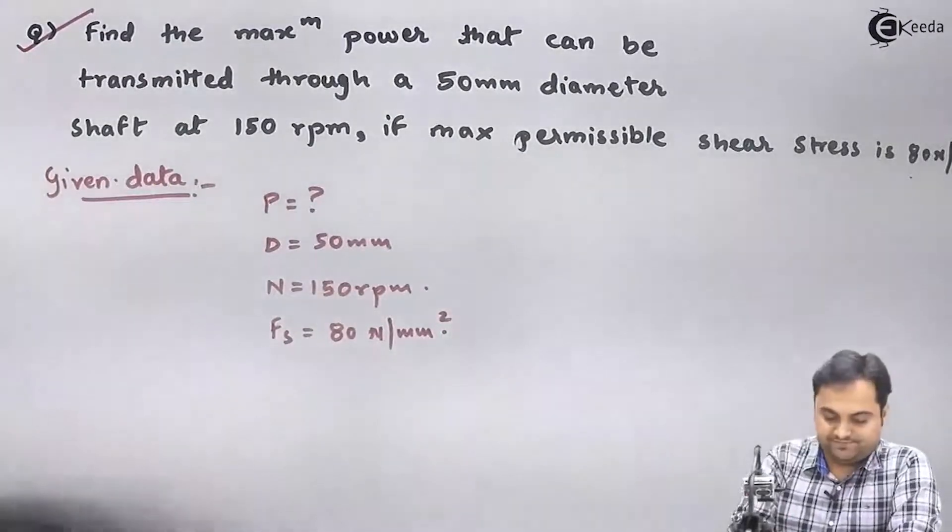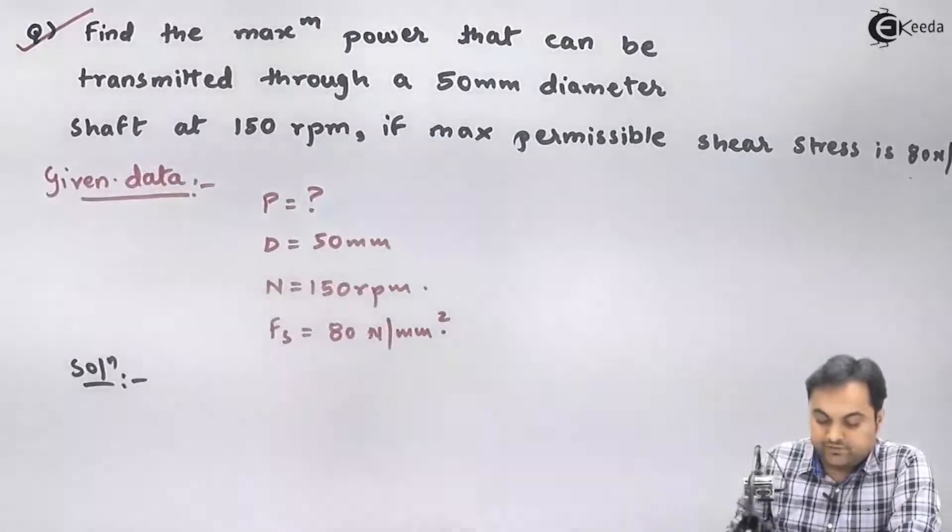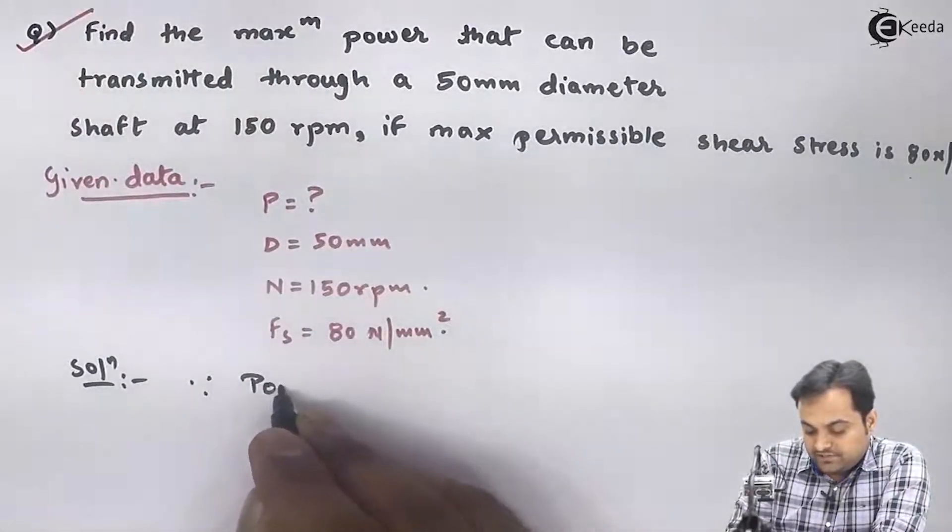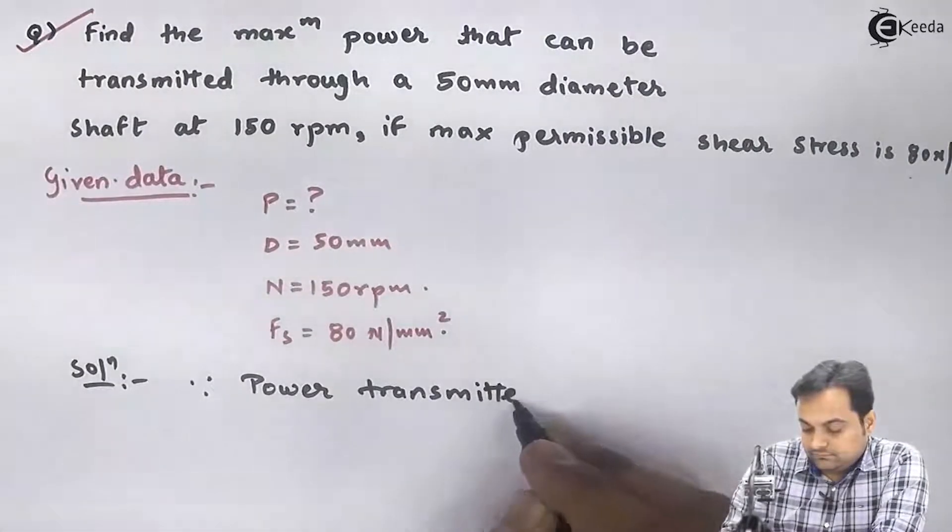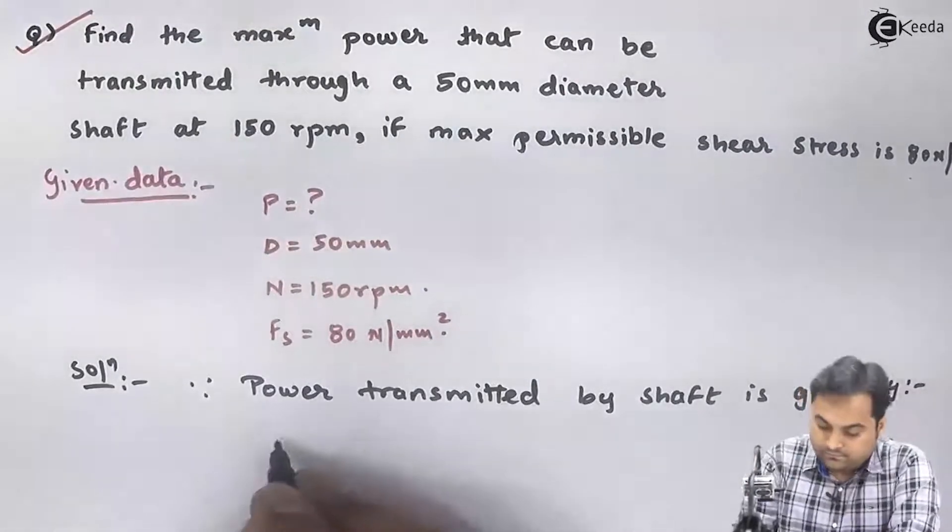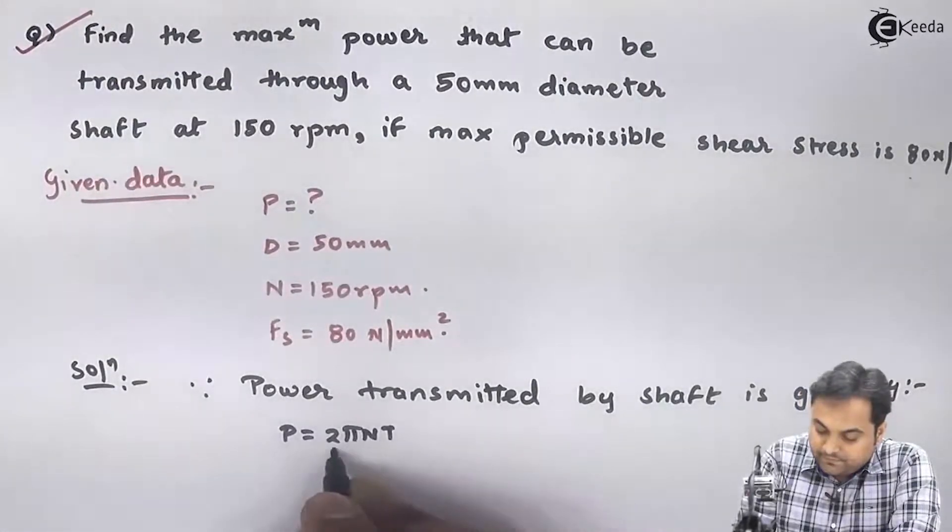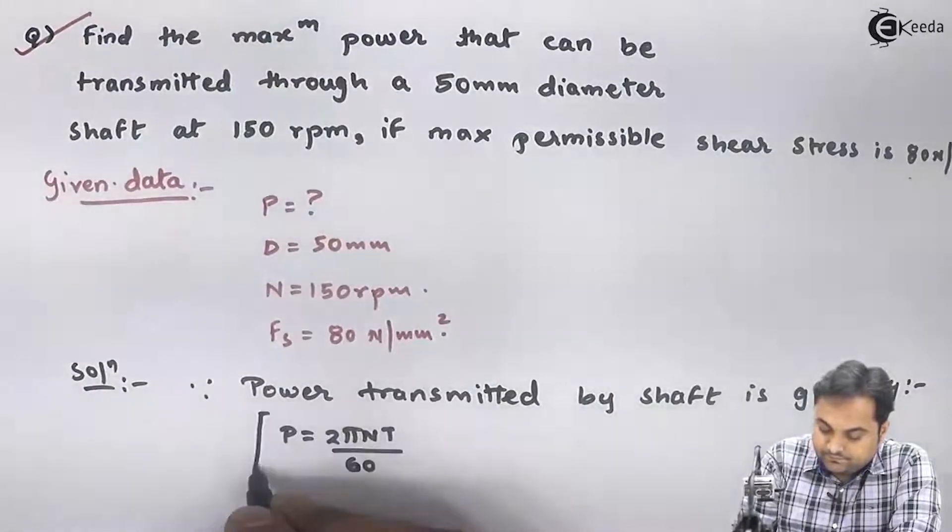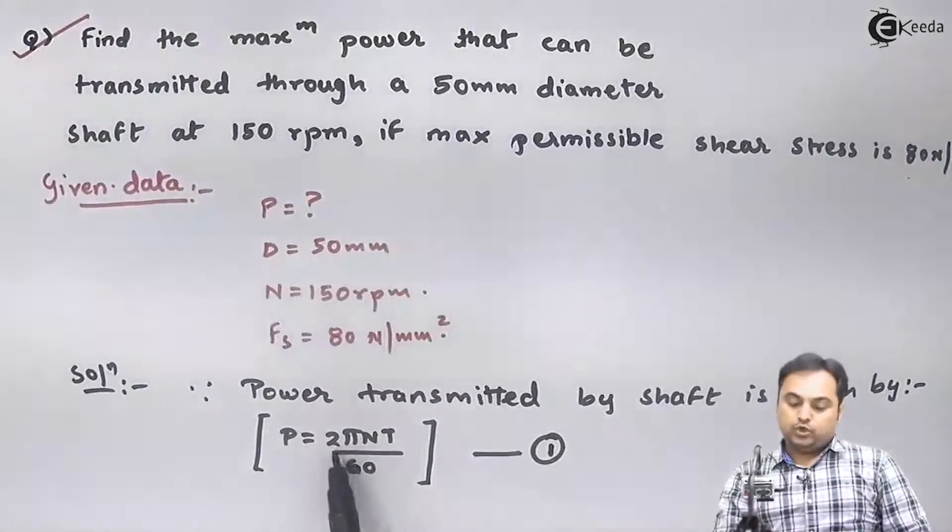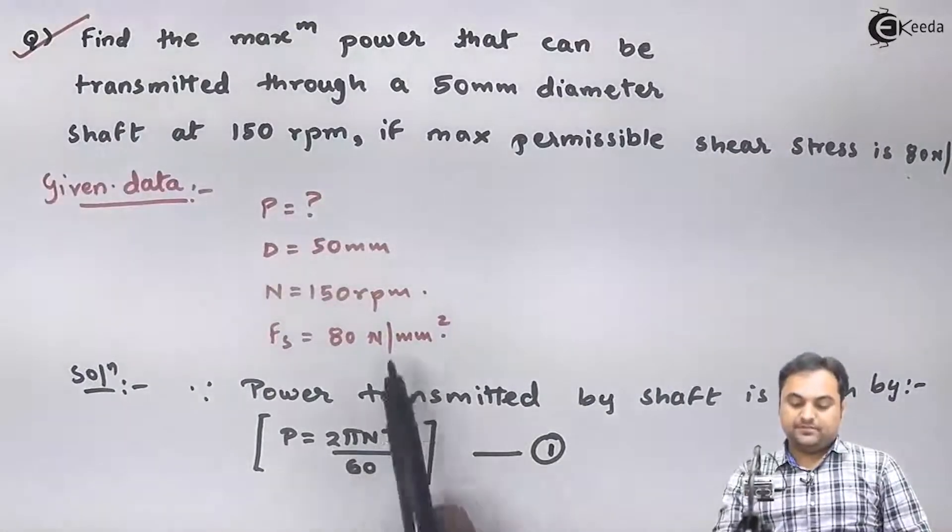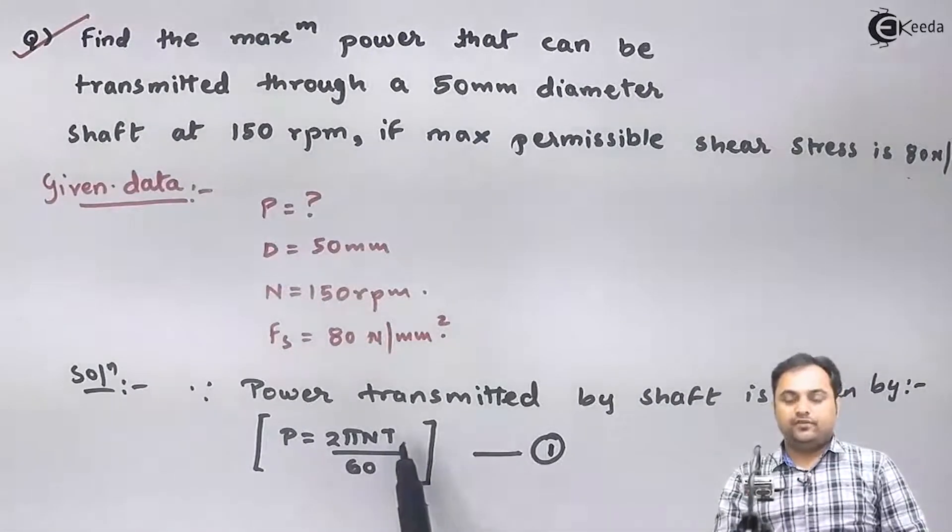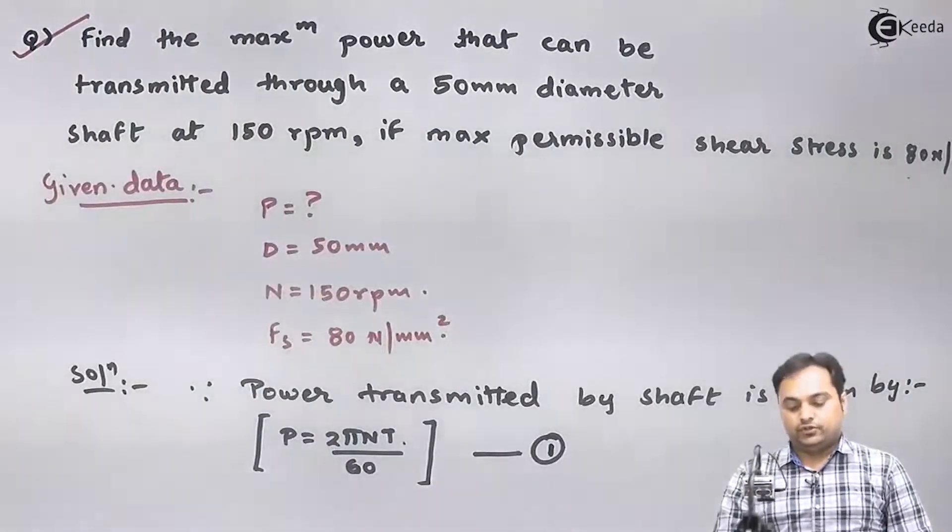Let us start with the solution. Since power is asked, I will write the equation of power. Power transmitted by shaft is given by P equals 2 pi NT by 60. Now as we see, power is asked, 2 pi and 60 are constants, rpm is given 150, only unknown is torque. So if we can get the value of torque, we will put all values in equation 1 and get the answer for power.